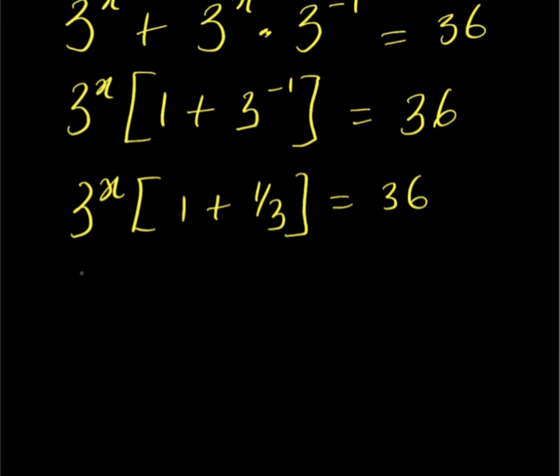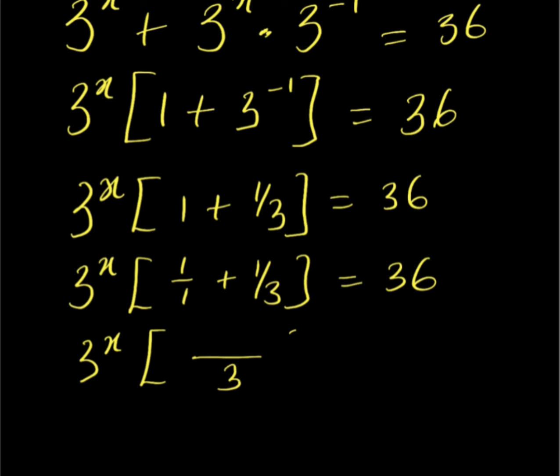Let us add the terms in the bracket. We have 3 power x times, in brackets, 1 over 1 plus 1 over 3, equal to 36. The LCM of 1 and 3 is 3, so 3 divided by 1 is 3.